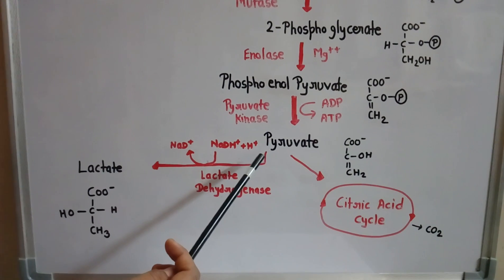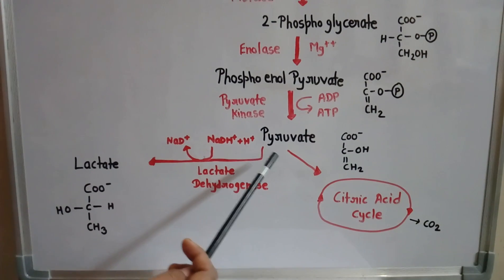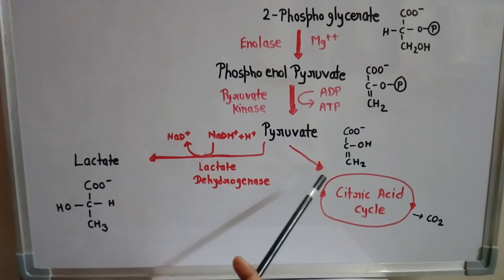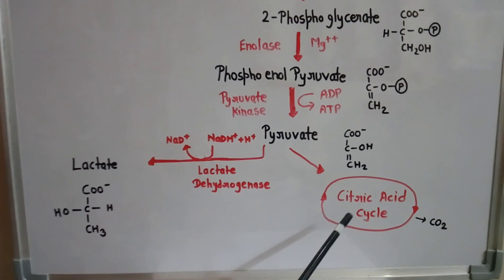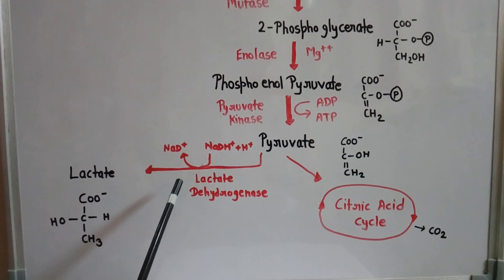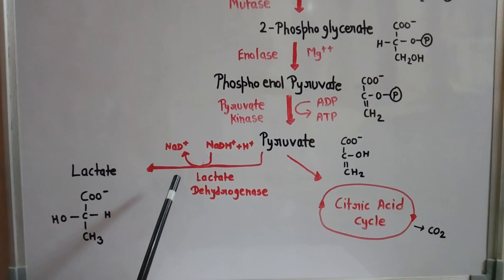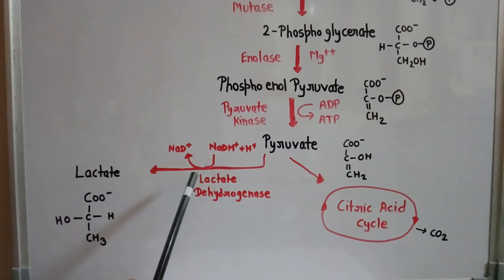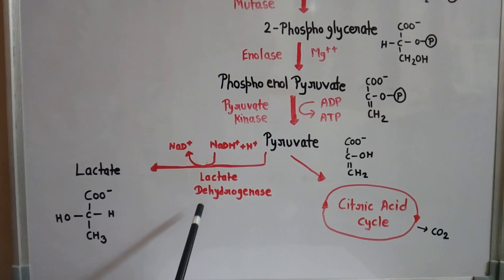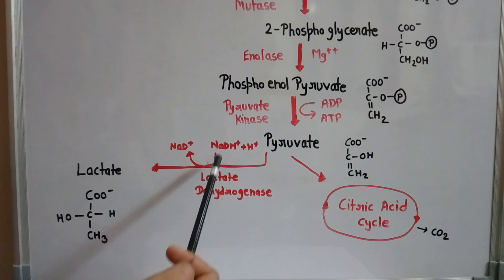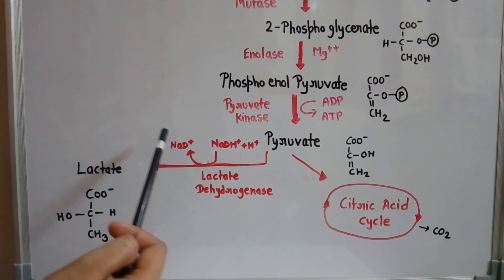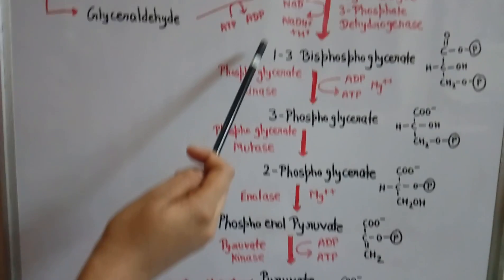Pyruvate may undergo two types of reactions. When oxygen is present (aerobic respiration), pyruvate enters the mitochondria and undergoes the citric acid cycle. When oxygen is absent — as in muscles — or when mitochondria are absent — as in erythrocytes — pyruvate is converted to lactate in the presence of the enzyme lactate dehydrogenase, and NADH is converted back to NAD⁺, which is reutilized in the glycolysis cycle.